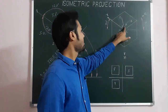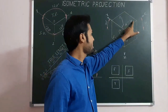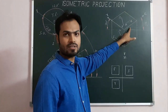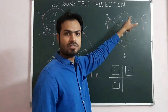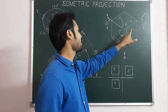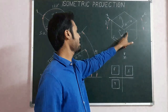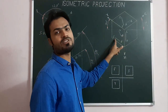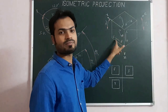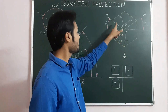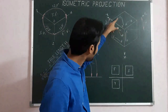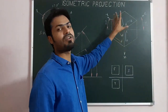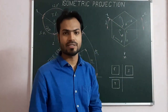AB is parallel to the x-axis, so it is an isometric line. Similarly, CD and EF are both isometric lines. The other lines — OP and LM — are non-isometric lines.